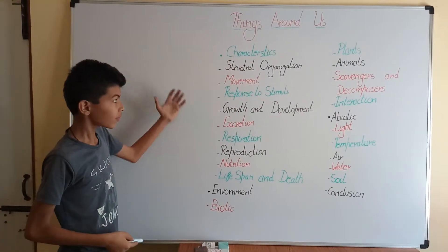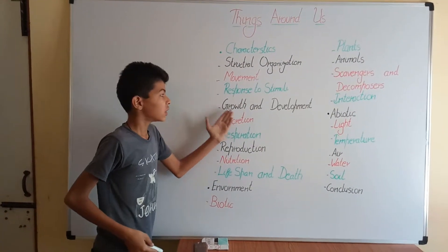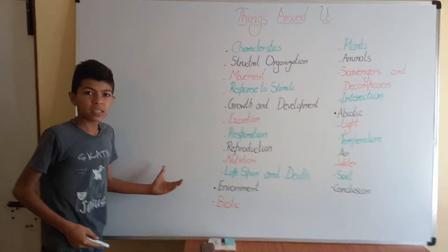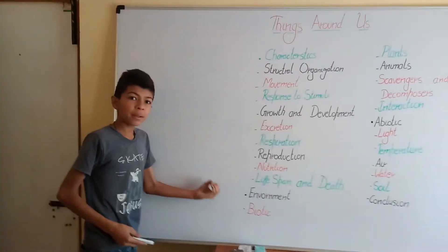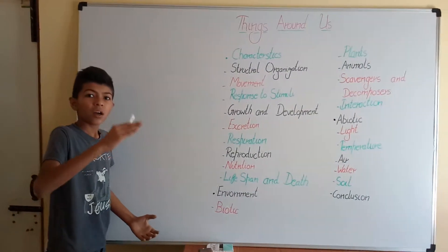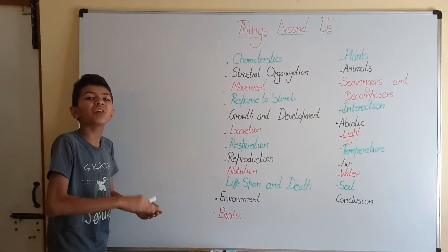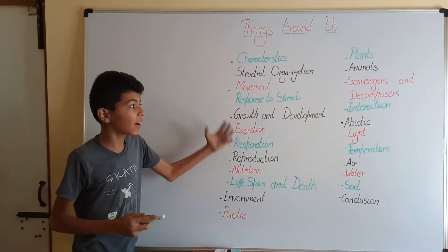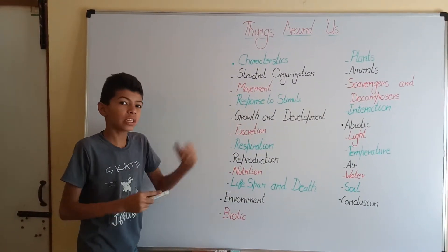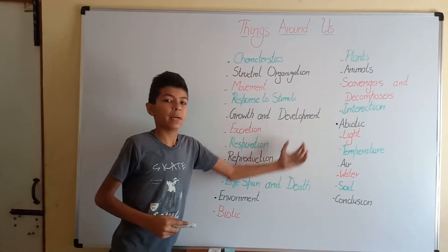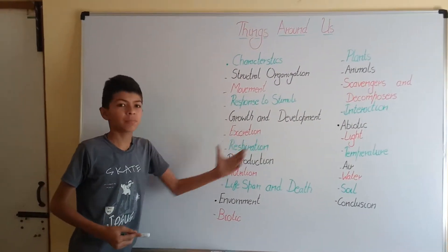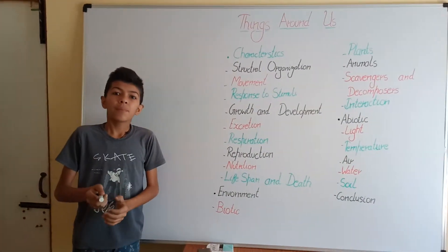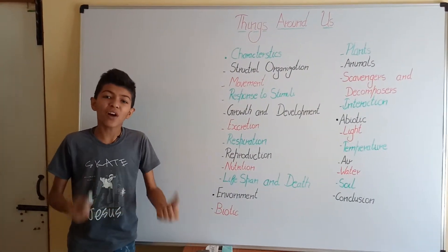Next we have growth and development. A seed grows into a tree, a little baby grows into an adult — all living things grow and develop their cells through the process of growth and development.